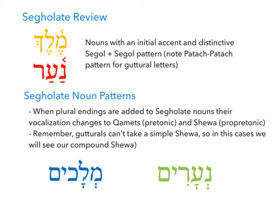Here is one more pattern for noun vocalization — this one relates to that other class of nouns we learned about: segolate nouns. Remember, these are nouns like melech (king) or na'ar (servant) that typically have two segols together. That's why they're called segolates. We can also have two patahs, and that patah pattern will be there if a guttural is present in the root, like the ayin in na'ar. So we're talking about vowels with the pattern segol-segol, or in the case of a guttural, patah-patah.